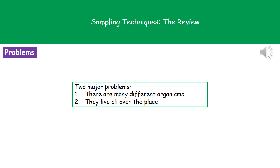Welcome to our review on sampling techniques. The first thing we need to think about are the problems we're going to encounter when trying to do any form of environmental sampling. The two key problems are that there are many different organisms which we need to be able to identify, and secondly that they live all over the place.